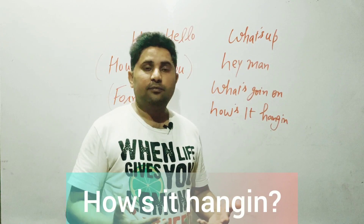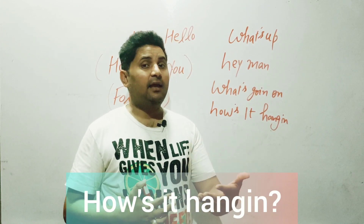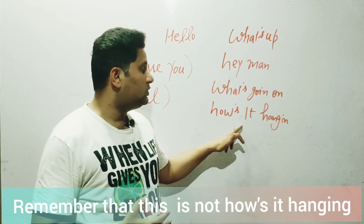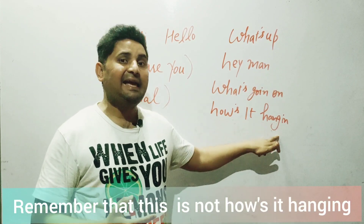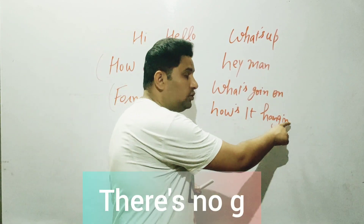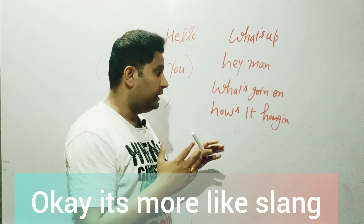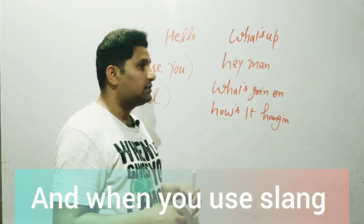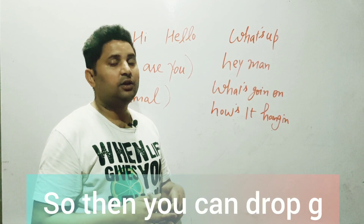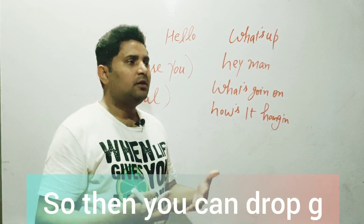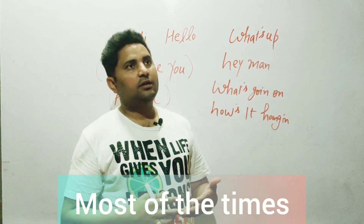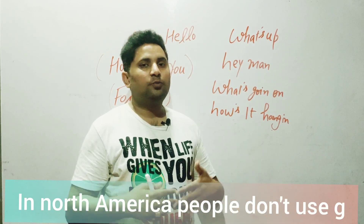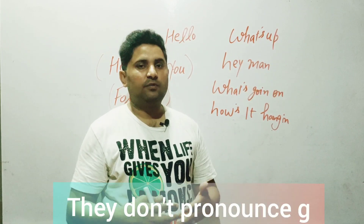The next one is 'how's it hanging.' Remember, it's not 'how's it hanging' with a hard G — there is no G. It's more like a slang. When you use slang, you can drop the G. Most of the time in North America, people don't pronounce the G.